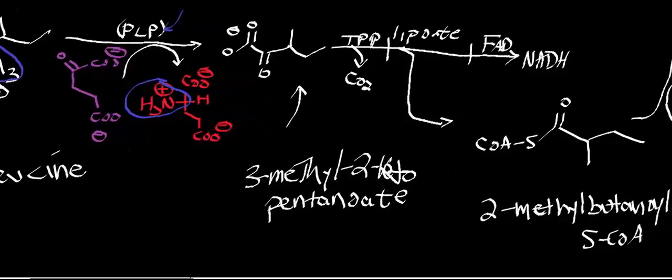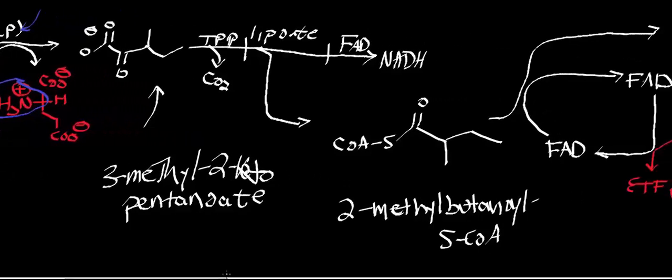This particular molecule, 3-methyl-2-ketopentanoate, is going to get consumed by an alpha-ketoacid dehydrogenase complex — specifically the branched-chain alpha-ketoacid dehydrogenase complex. Mechanistically, it's identical to all the other ones, like the pyruvate dehydrogenase complex, alpha-ketoglutarate dehydrogenase complex, and alpha-ketoadipate dehydrogenase complex.